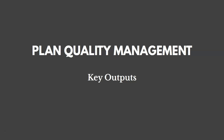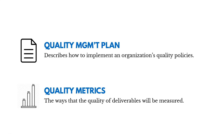Let me talk about Plan Quality Management and the key outputs of that process. The first is going to be the quality management plan, which describes how an organization's quality policies will be implemented. And then quality metrics — a description of a project or product attribute and how to measure it. So we've got a plan and metrics to determine whether or not we're meeting quality expectations.